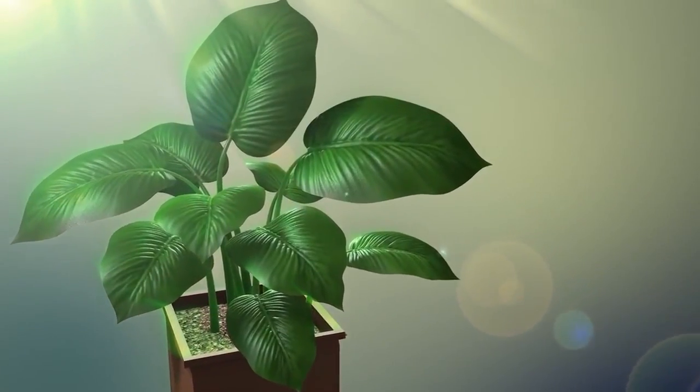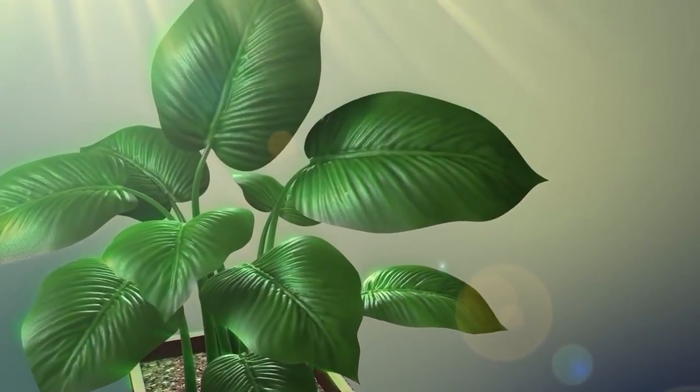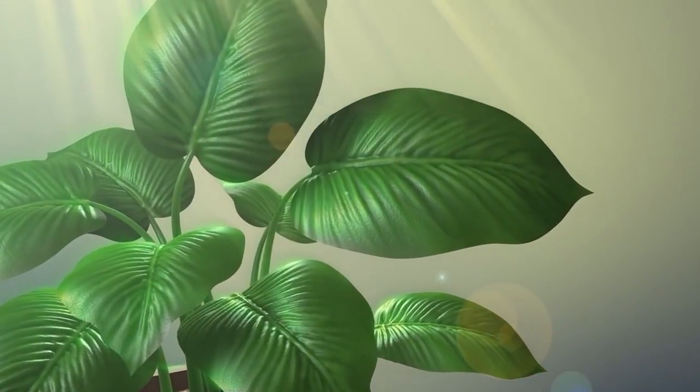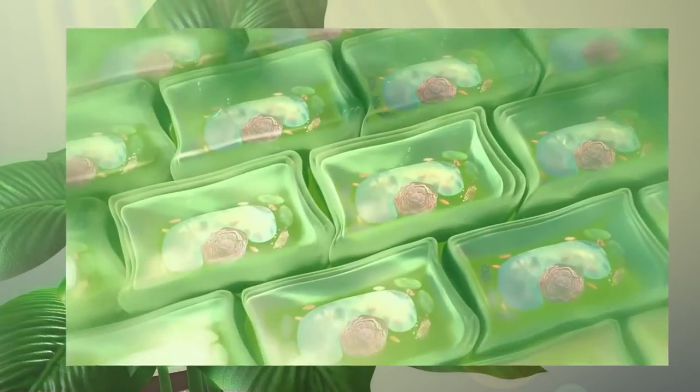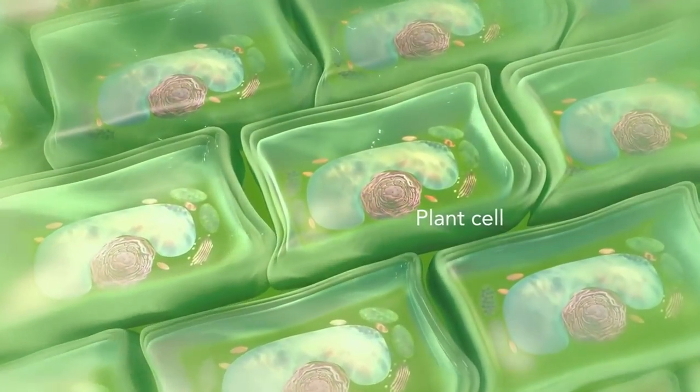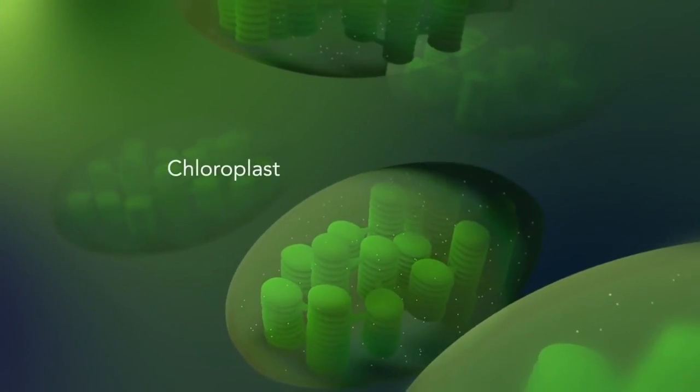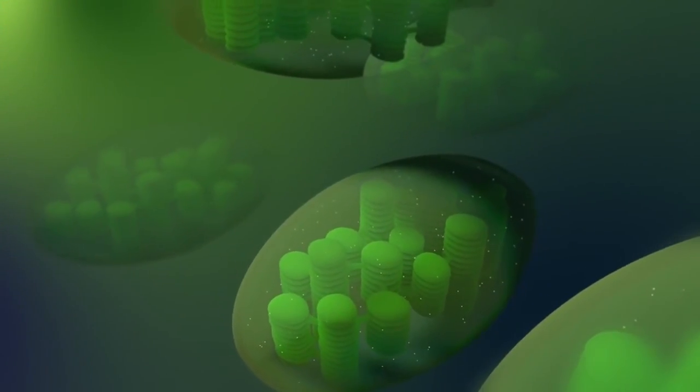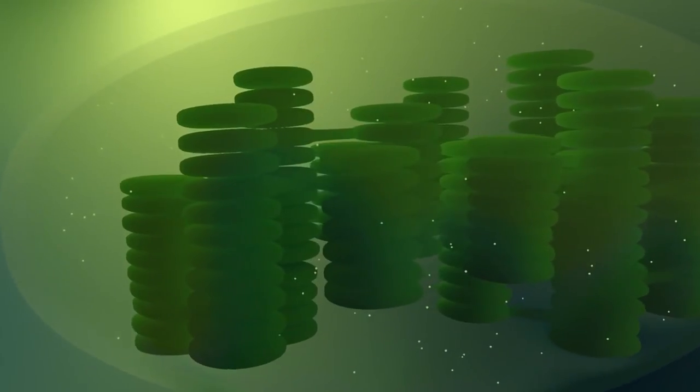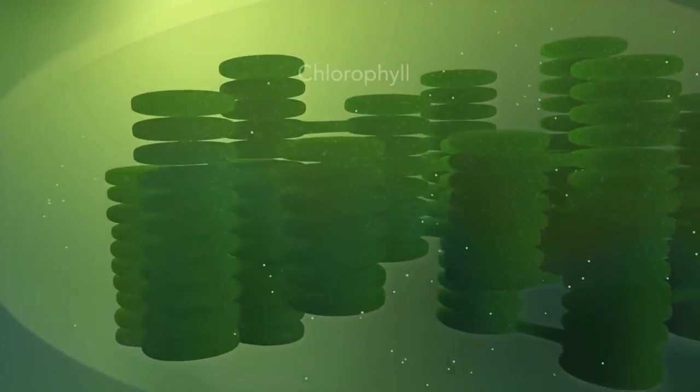Some organisms, such as plants that are photo-autotrophic, meaning they capture sunlight for energy, have cells with an organelle called a chloroplast. The chloroplast is where photosynthesis happens. It's green because it has a green pigment called chlorophyll.